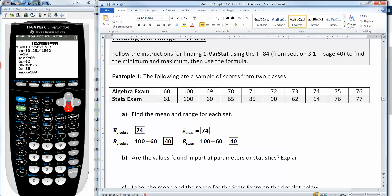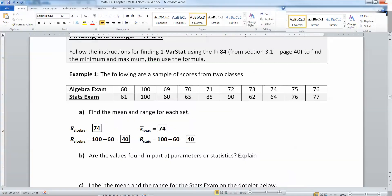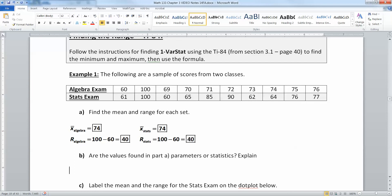Are the values that we found above parameters or statistics? It says right here that it's a sample of scores. So these would be statistics because they're from a sample. The numbers are calculated from a sample or from two samples.